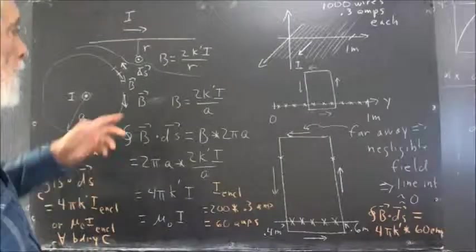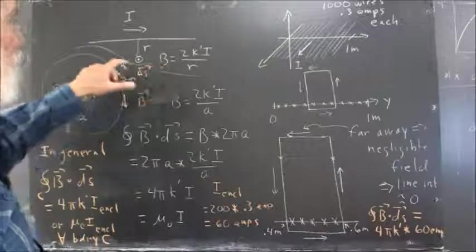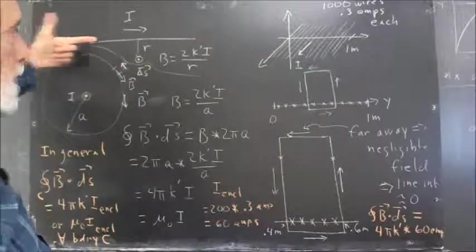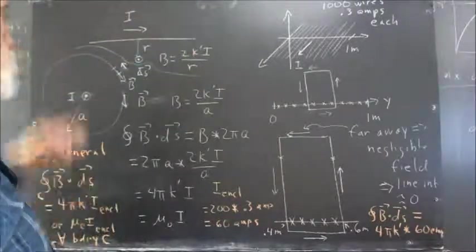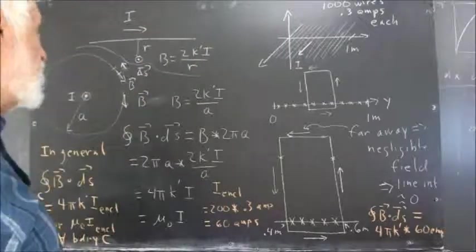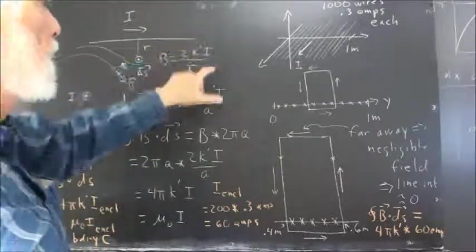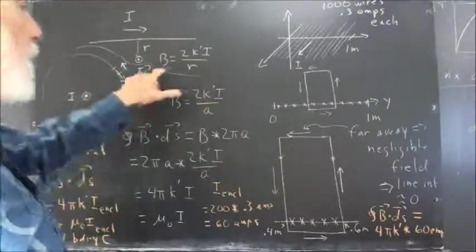First, let's recall that the magnetic field at a distance r from a long straight conductor with current running along it is 2k prime I over r. There's your magnetic field.